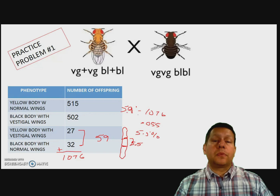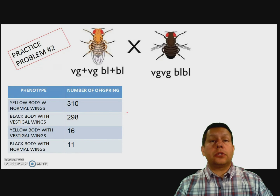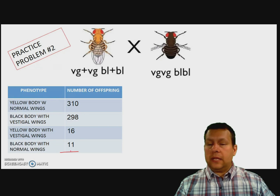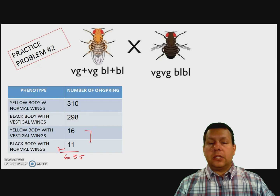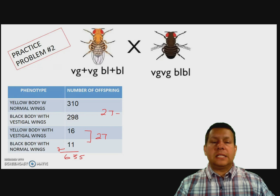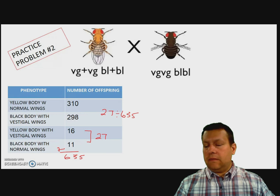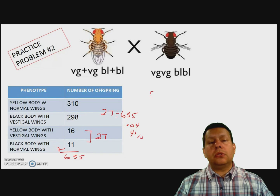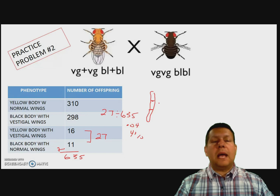Here's practice problem number two. You can go ahead and pause the video and I'll show you how to do it. Again, we recognize our parental types and our recombinants. We add these all together and get 635. When we add our recombinants, we get 27. So: 27 divided by 635 gives you 0.04, which is 4%. That means if we draw a chromosome, those two traits are four map units away from one another.